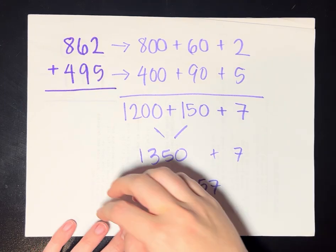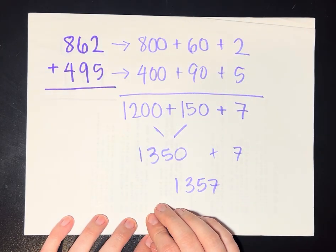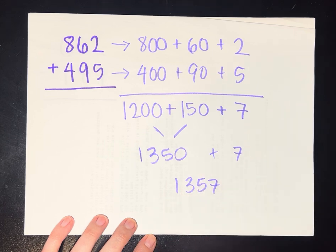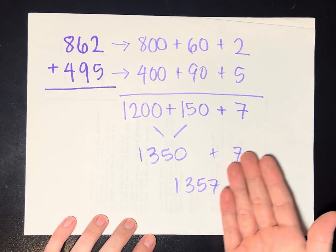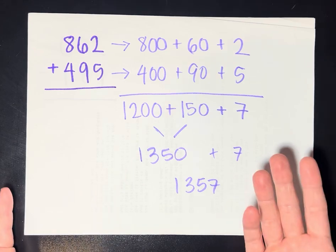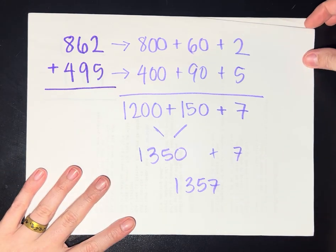Notice that this took up a lot more paper than the standard algorithm, and it was probably a little slower than the standard algorithm, but there's absolutely no reason that I couldn't add two numbers using this method.